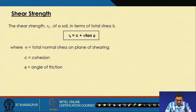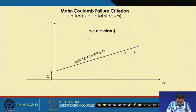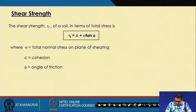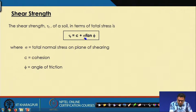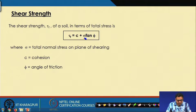The shear strength of a soil can be represented by cohesion plus sigma_n times tan(phi). Here sigma_n is the applied normal stress on the soil, sigma is the total normal stress on the plane of shearing, c is the cohesion, and phi is the angle of friction. This shear strength expression is in terms of total stress.